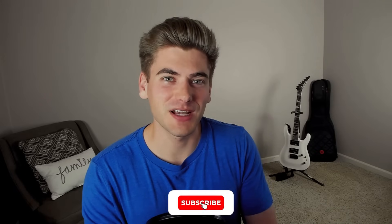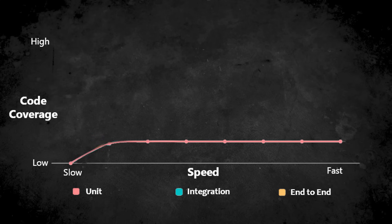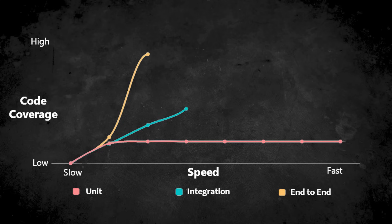If we compare all these test types together, we can look at two factors: the speed of writing and running tests, and how much code each test covers. Unit tests are quick to write, run very fast, but test a small amount of code. Integration tests are in the middle — relatively quick to write but slower than unit tests because they call out to APIs and databases, yet they cover more code and generally call more than one function at a time. End-to-end tests are quite a bit slower to write, more error-prone, and definitely slower to run, but they cover a huge portion of your code and act just like a user interacting with your site.